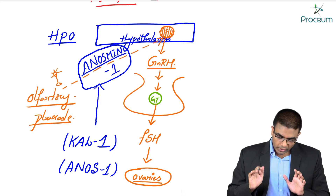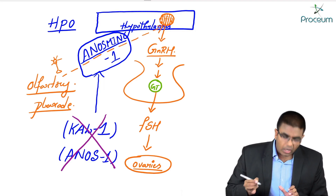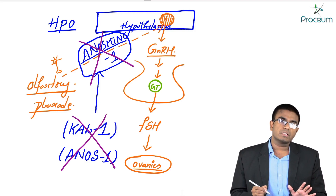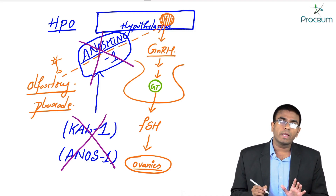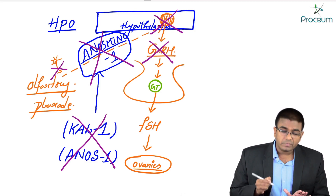In Kallmann syndrome, there is a mutation of the KAL1 gene — also known as the anosmin gene — so that the anosmin-1 protein is not expressed. If there is no expression of anosmin-1 protein, there is no migration of GnRH-producing neurons to the hypothalamus. So in this female, there is no GnRH production, or very little GnRH production.